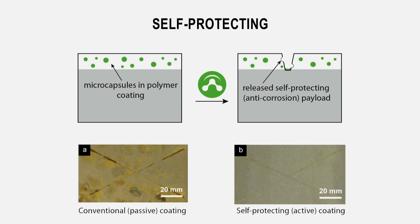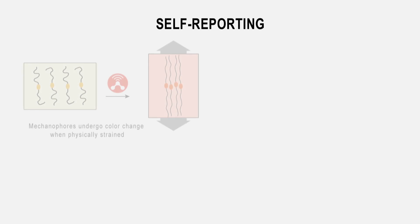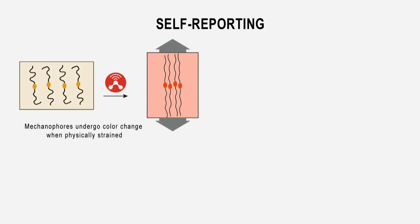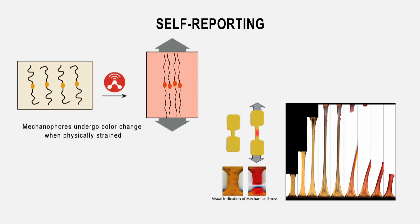The end result is a much longer lifetime for whatever you've put the paint onto. One of our projects sort of on the way to self-healing, we developed polymers that are force-sensitive. So when you pull on them, they change color to indicate they're getting overstressed.